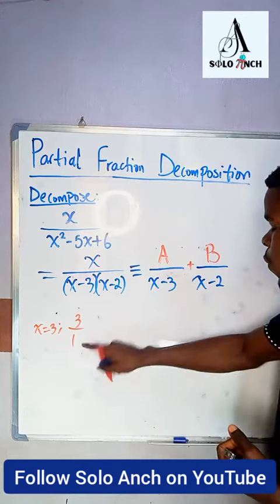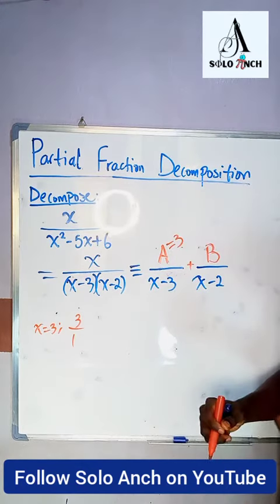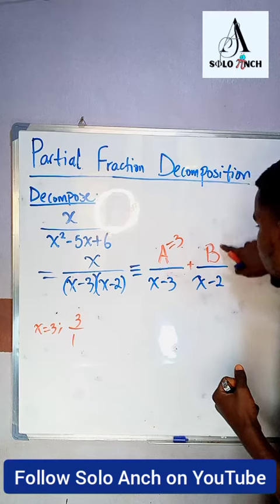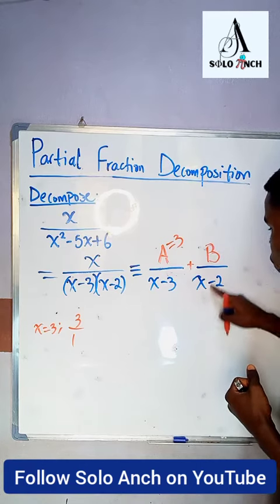So 3 over 1 is just 3, and that is the value of A. So let's do it again for B.